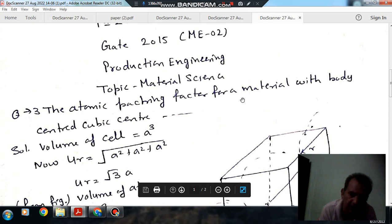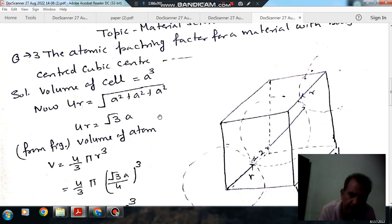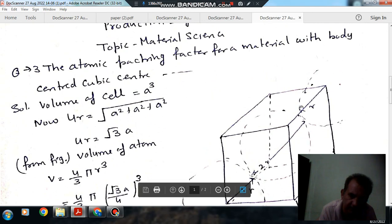the atomic packing factor for a metal with body centered cubic center. In the body centered cubic center, there is one central atom and eight corner atoms.